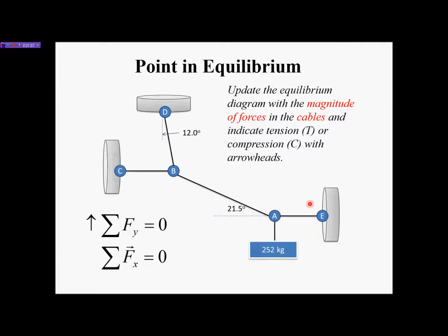Once we have drawn a free body diagram, we'll use these two equilibrium equations to solve for the unknown forces. We have a mass here of 252 kilograms — that's how I know it's a mass, because of the unit. I have to change that into a force, and we'll do that in the next slide.